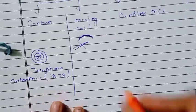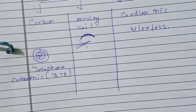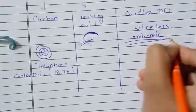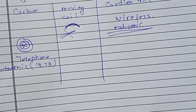The cordless microphone is also known as a wireless microphone or radio microphone. It is not attached to any recording, amplifying device, or cables. Cordless microphones have two types: those that can be attached to the body and those that cannot. They use VHF and UHF frequencies with FM modulation.